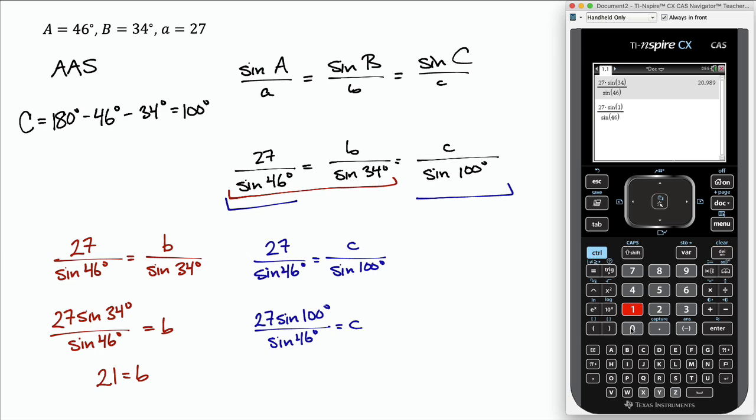For c, same thing: 27 sine of 100 over sine of 46, and we get about 37. So about 37 for c.